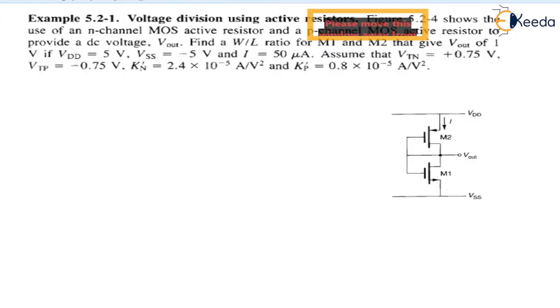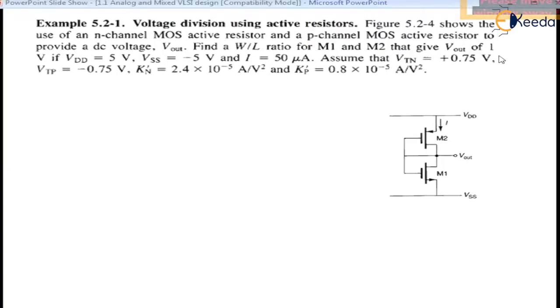So I have taken an example which shows the use of an n-channel MOS active resistor and p-channel MOS active resistor. So there are two transistors, one is M1 and M2. This is n-channel and M2 is p-channel.